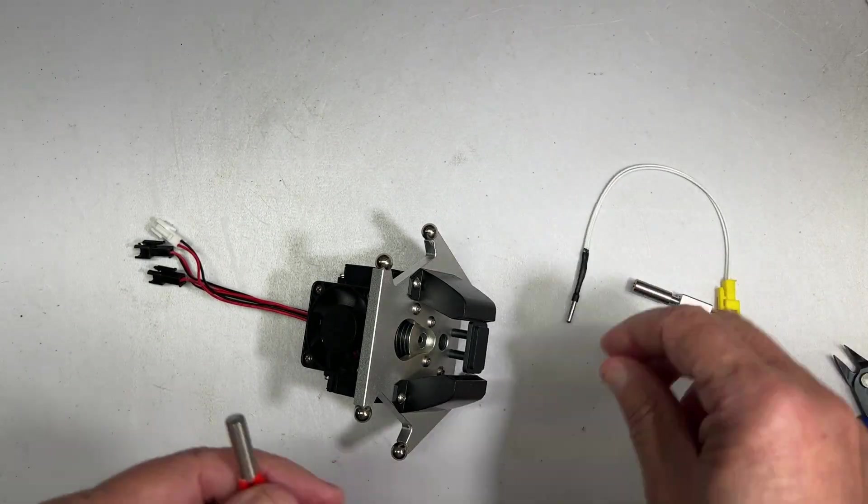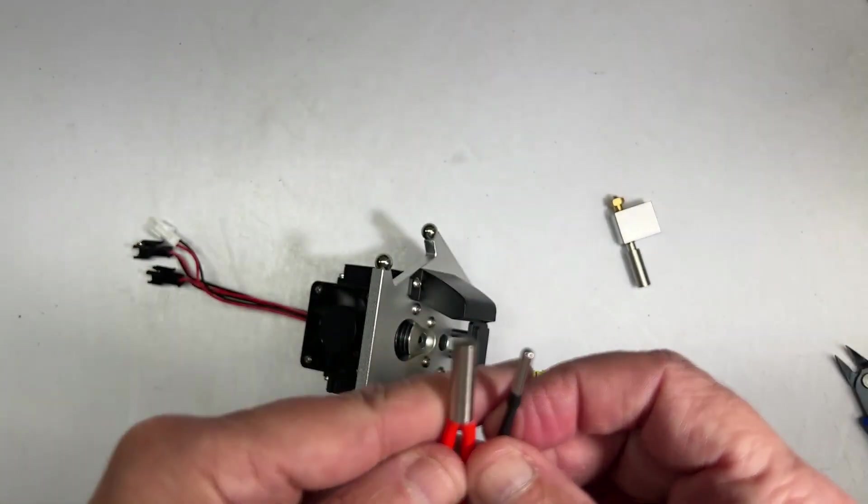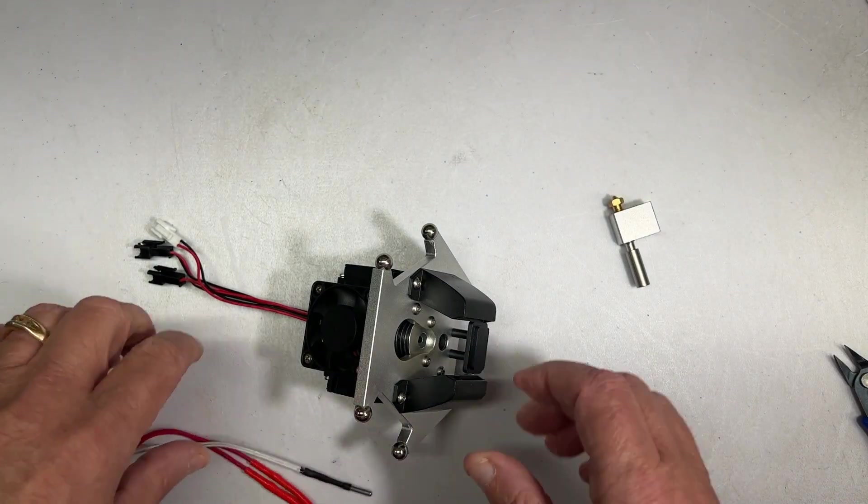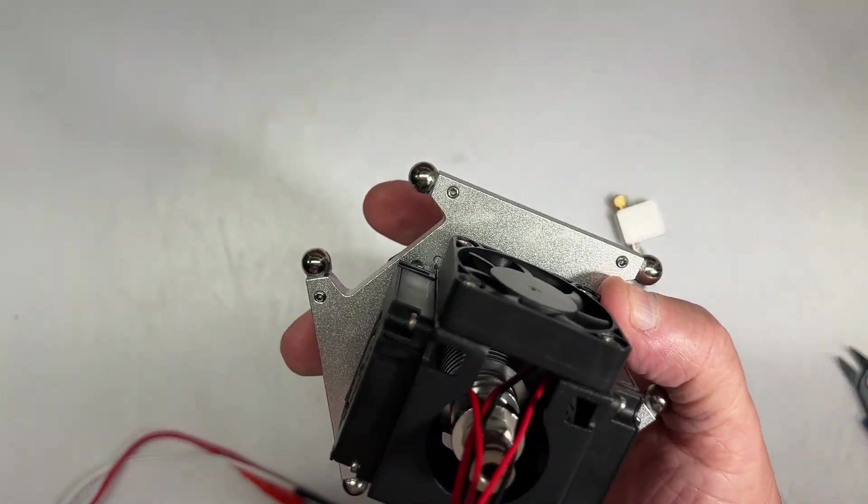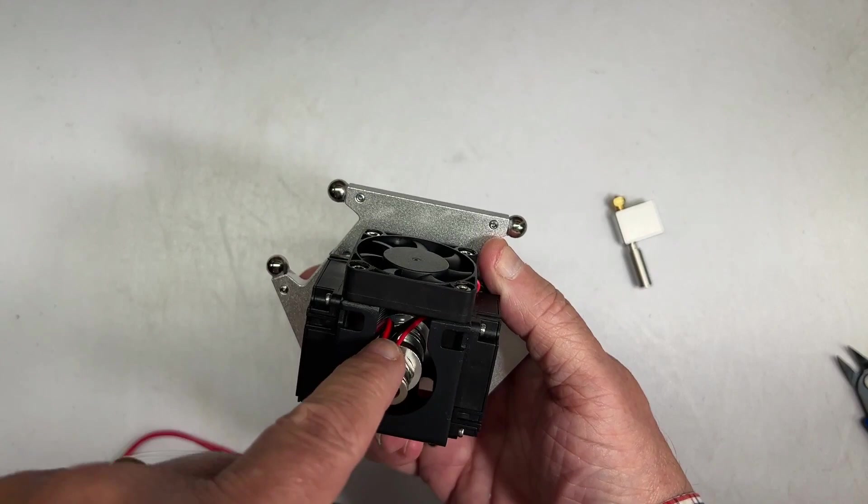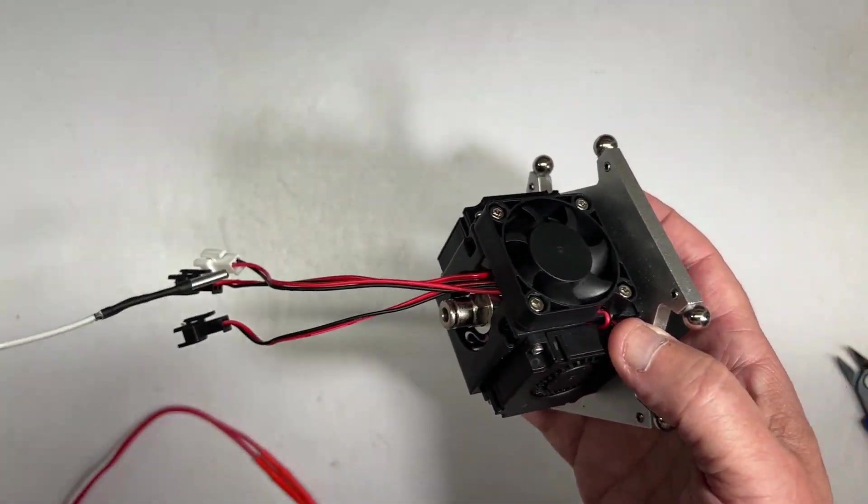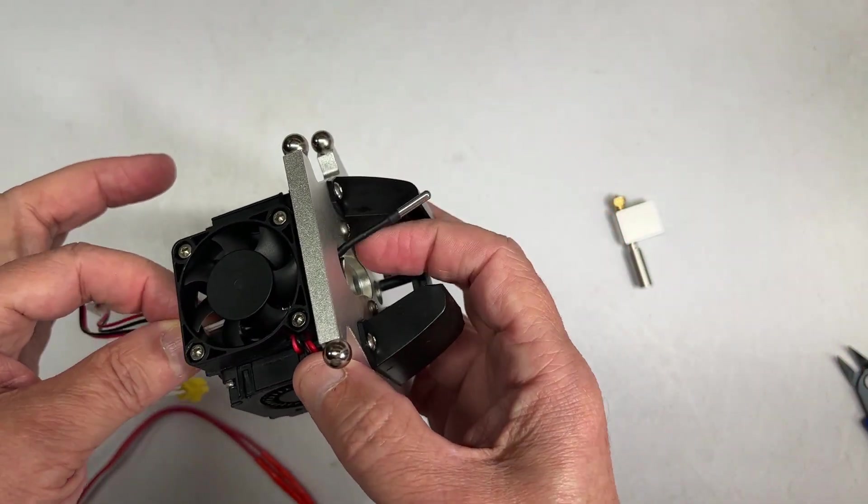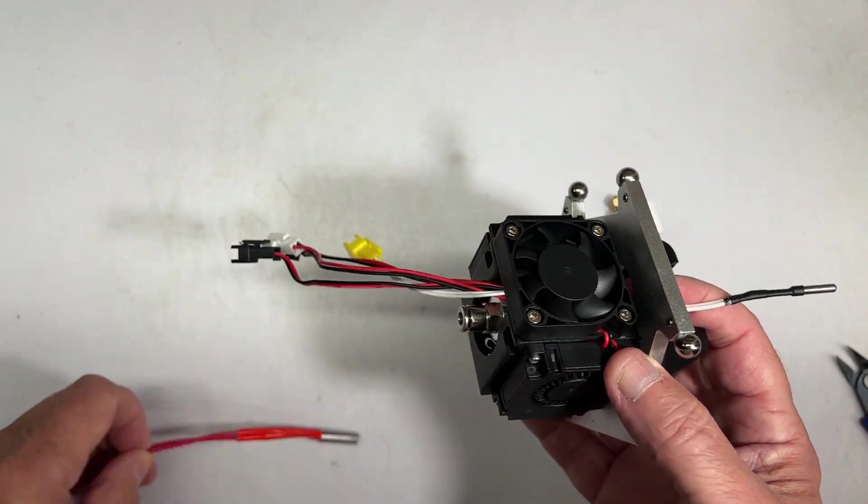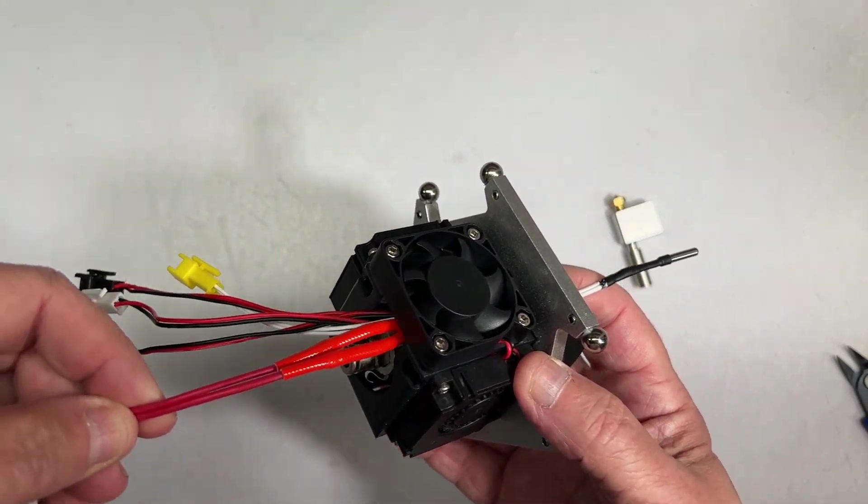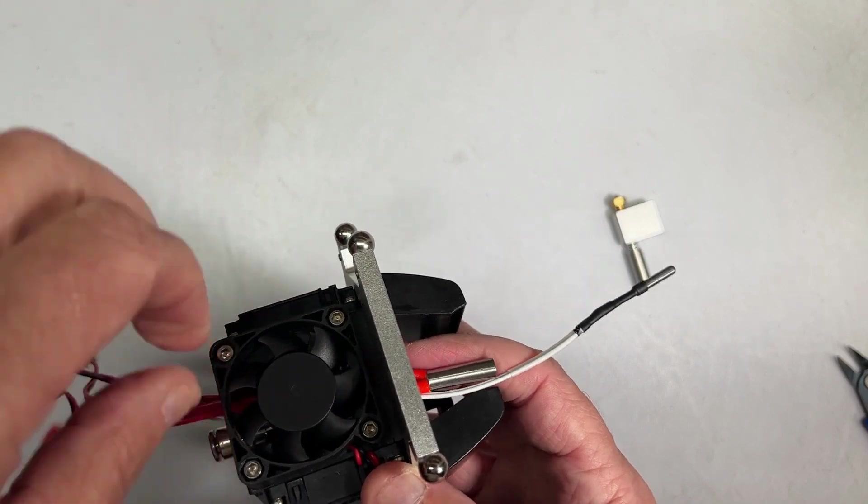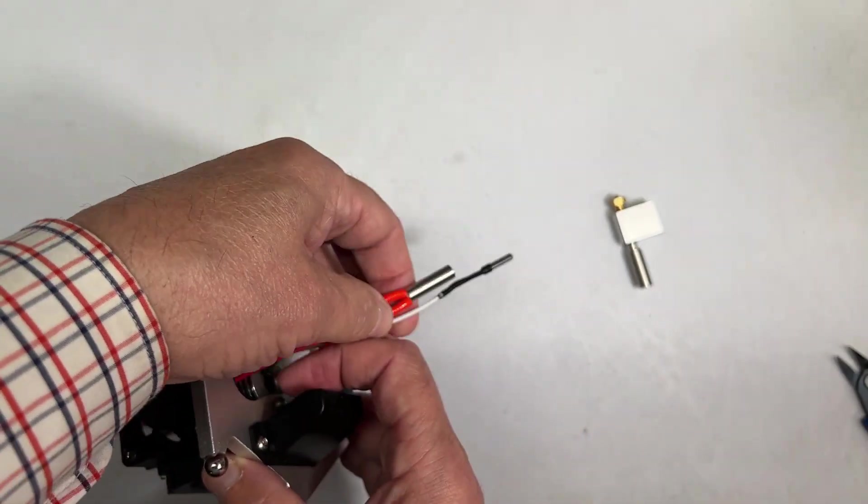Next thing we'll put in the new thermistor and new heat rod. So again, just look and see which way the hole is and you can see that it's lined up perfectly. Putting it in this way is much easier, as you can see. Doing the same thing with this, much easier. There you have it.